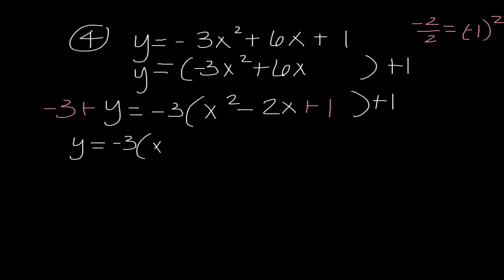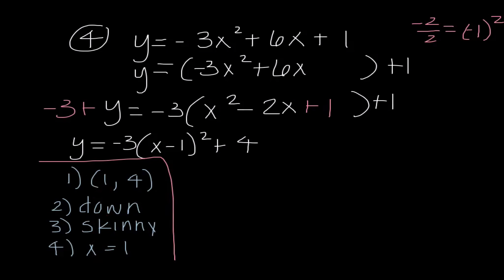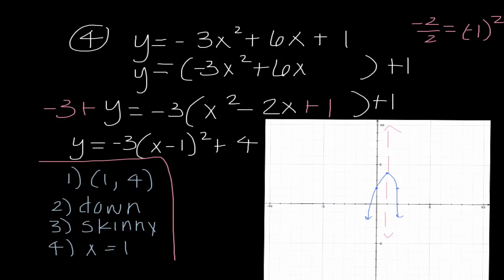So I get y equals negative 3 times the quantity x minus 1 squared plus 4. Listing characteristics: vertex is 1, 4; it's going down and it is skinny; and line of symmetry is x equals 1. On every single problem, it's really important to list all four characteristics — on every quiz and test you need all four to get credit. On the graph: vertex at 1, 4; since it was down and skinny, I went down 2 and over 1 in both directions, then drew the parabola and line of symmetry. The only new thing we're learning today is how to transform a standard form equation into vertex form — everything else is exactly the same. Keep practicing!